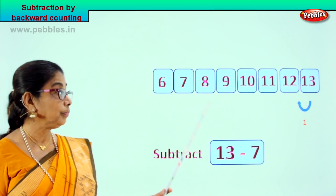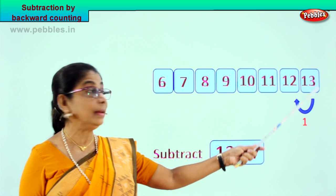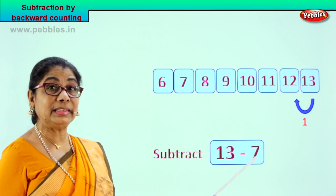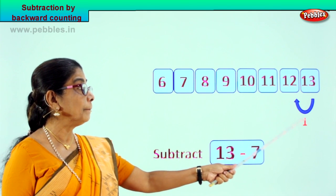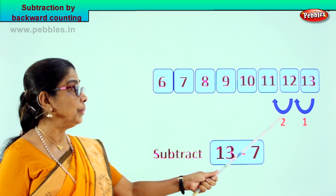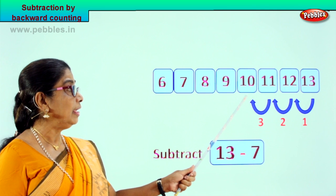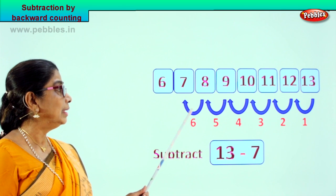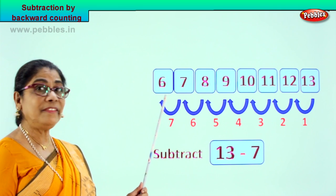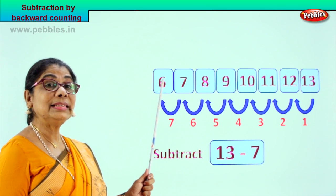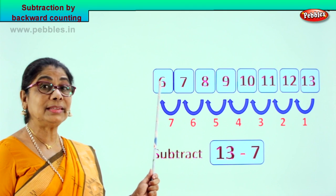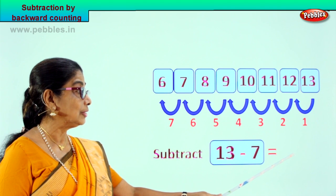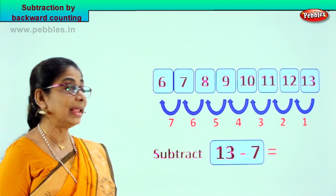Now we have here 13. From 13 we are going to count backward 7 steps. 1, 2, 3, 4, 5, 6, 7. We counted 7 steps backward. What is the answer? 6. What will be your answer? Your answer is 6. So you write the answer 6 here.